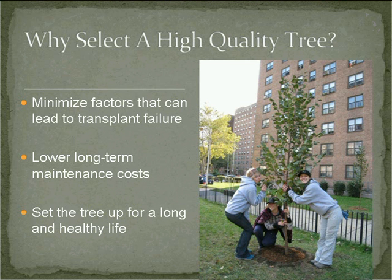So why select a high-quality tree? Obviously to minimize factors that can lead to transplant failure, mitigate maintenance costs, and set the tree up for a long and healthy life. This slide shows a linden we planted on a New York City Housing Authority campus. Some things to notice: the shape of the tree itself, the branching structure, the straightness of the trunk. Planting depth is very important, and in these property types where maintenance is limited, putting in the healthiest tree gets you a lot further. You always want to look for no crossing branches, no wounds in the trunk, a good central leader, and a 60 to 70 percent live crown ratio, which helps trees caliper faster and stand up straighter without a stake — important cost-wise and for safety.